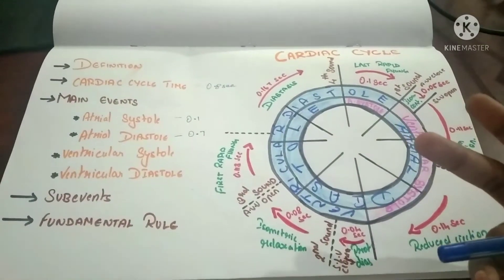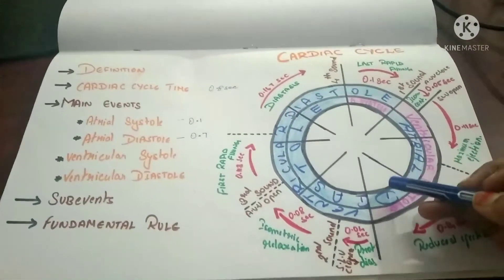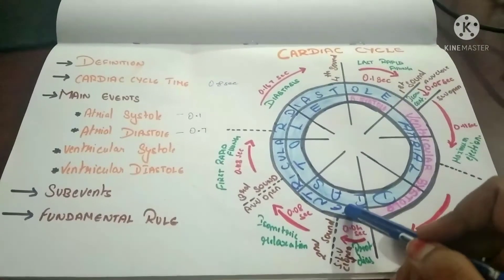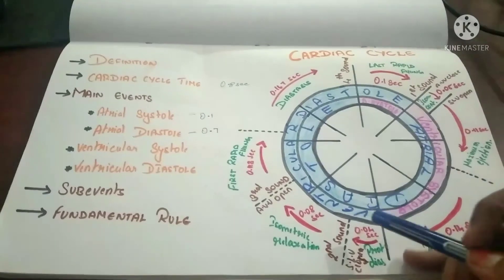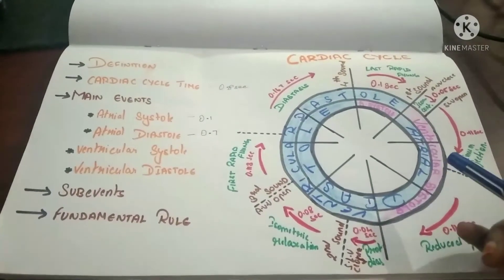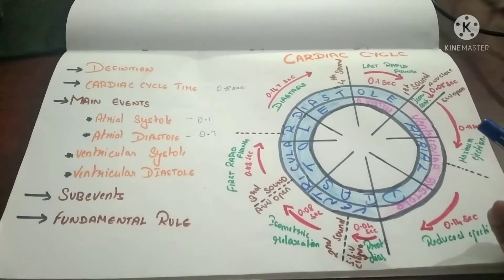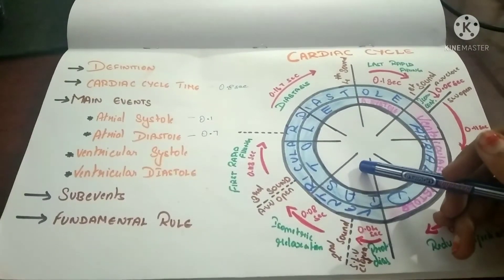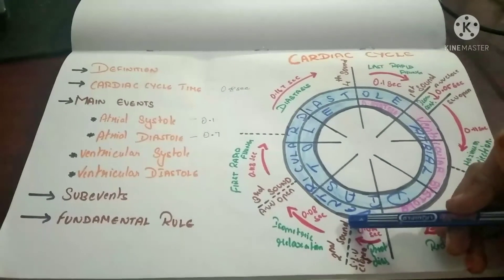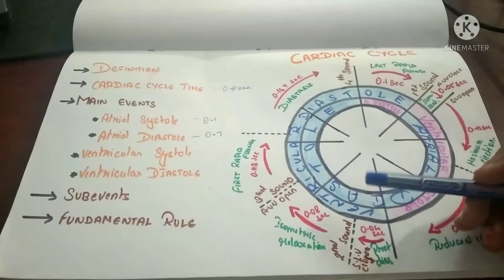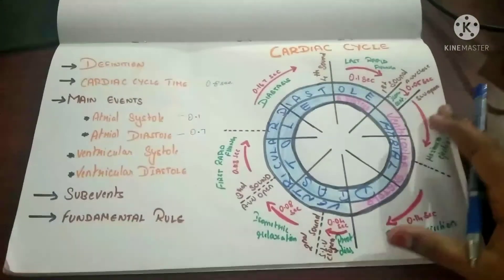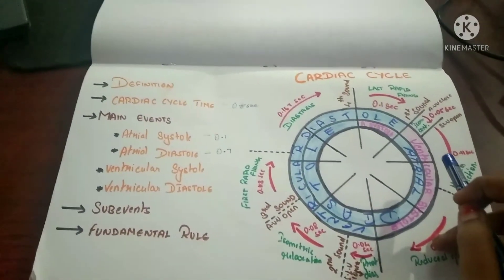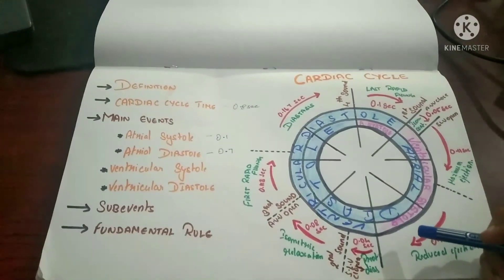There is one fundamental rule remaining — the second fundamental rule. This states that the diastole of the atria and the diastole of the ventricle will partially overlap. When both diastoles overlap, this is known as the heart's diastole — when both the atria and ventricle are in the diastole phase simultaneously — and it lasts 0.4 seconds. That concludes the cardiac cycle. Thank you for watching. If you liked the video, don't forget to like and subscribe to ASK Tutorial, and comment below if you have any doubts or topics to be discussed.